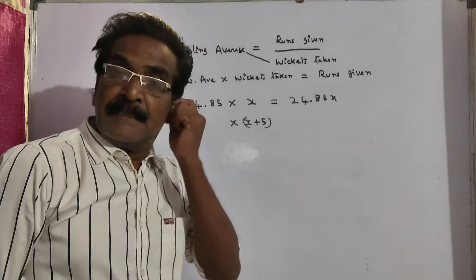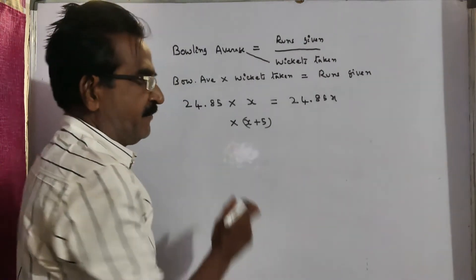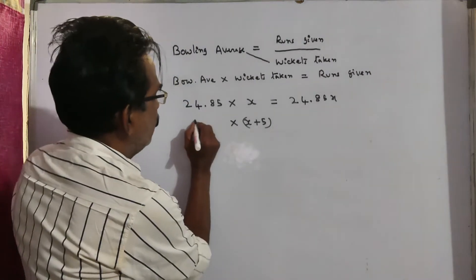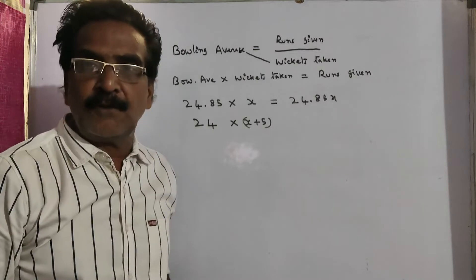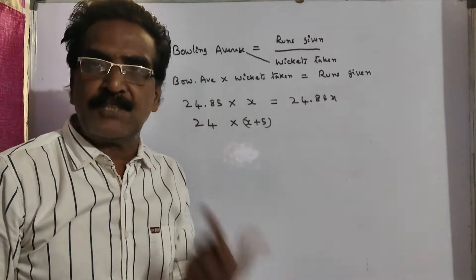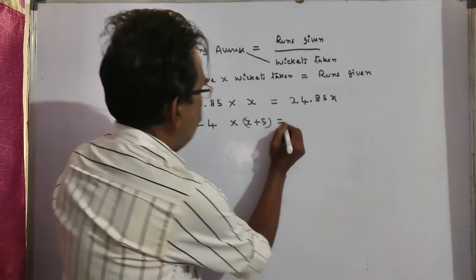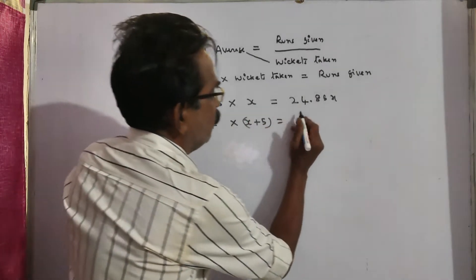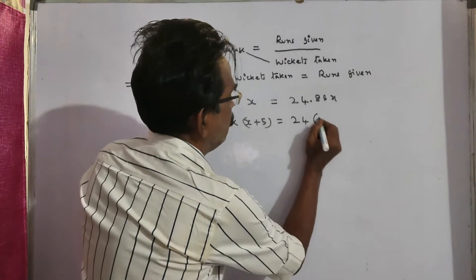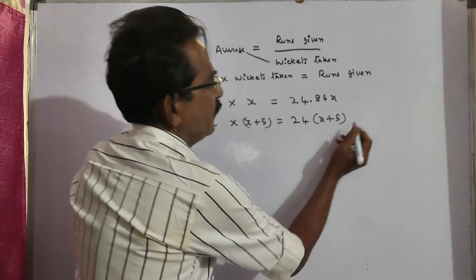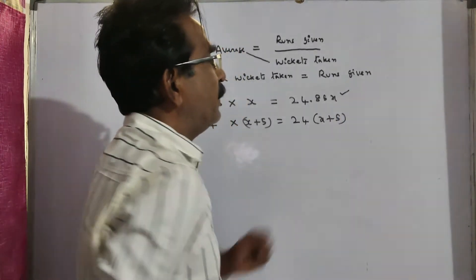His bowling average decreased by 0.85, so his present bowling average is 24.85 minus 0.85, which is 24. So: bowling average into wickets equals runs, giving us 24 into (x plus 5).